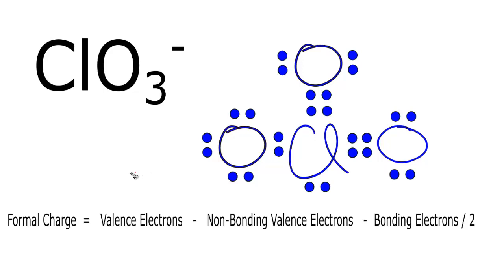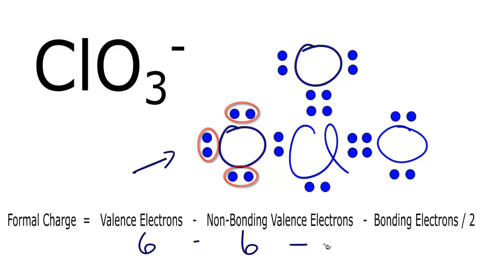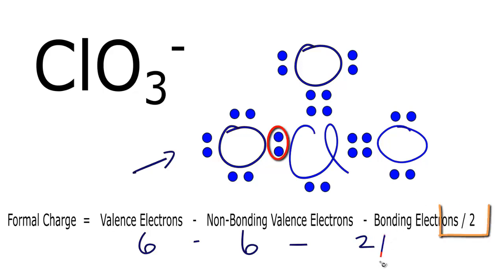Let's start with this oxygen here and calculate the formal charges. Oxygen always has six valence electrons — it's in group 16, or sometimes called 6A. We subtract the non-bonding valence electrons, which are not involved in a chemical bond: we have two, four, six of those. Then we subtract the bonding electrons divided by two: two over two. Six minus six is zero, minus two over two gives us a formal charge of negative one.